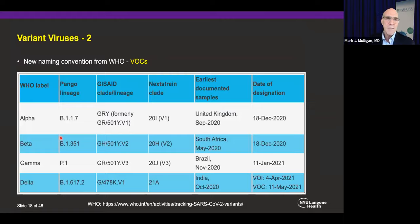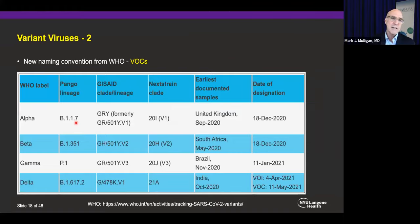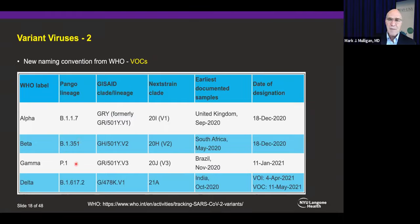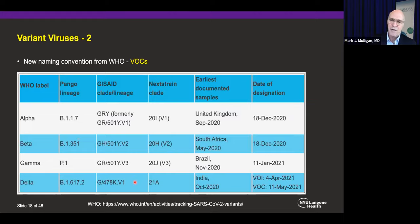We now have new naming conventions using the Greek alphabet — alpha, beta, gamma, delta, and so on. These are the variants of concern identified by WHO. Alpha is the UK variant and currently the dominant strain circulating in the US — that's the answer to that first poll question. Beta is the South African B.1.351 variant. Gamma is a Brazilian variant. Delta is the Indian variant, and about an equal number of you suggested it was most common — maybe forward-thinking, because it's going to be very soon.